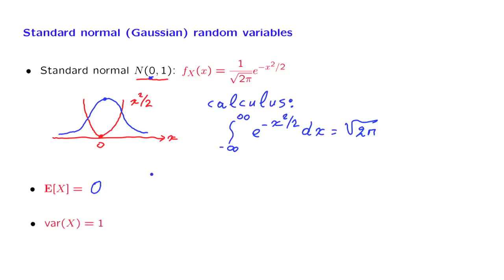How about the variance? Well, to calculate the variance, you need to solve a calculus problem again. You need to integrate by parts. And after you carry out the calculation, then you find that the variance is equal to 1. And that explains this entry here in the notation that we have been using.